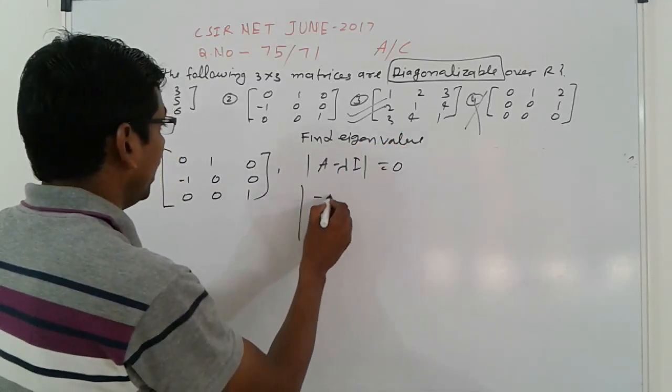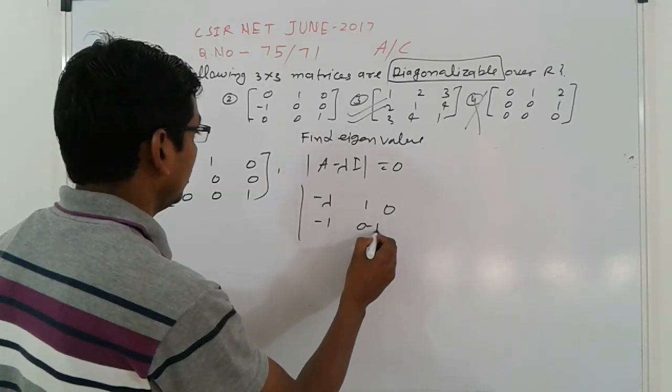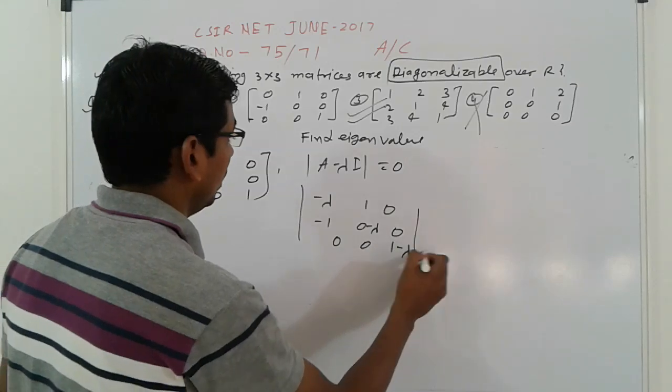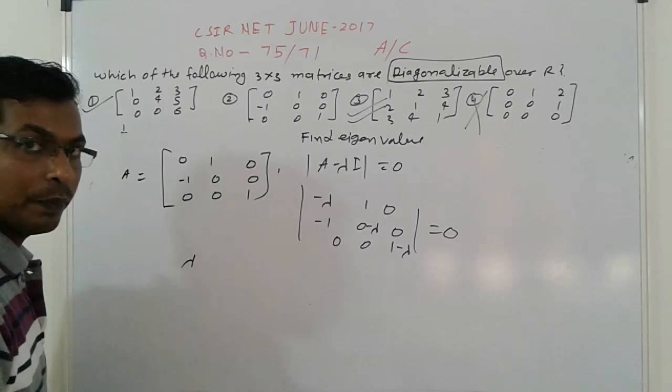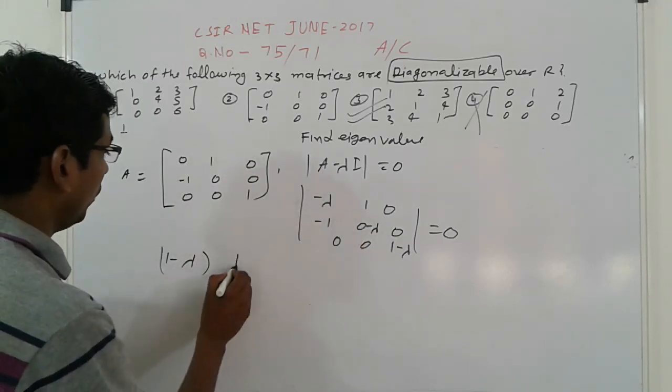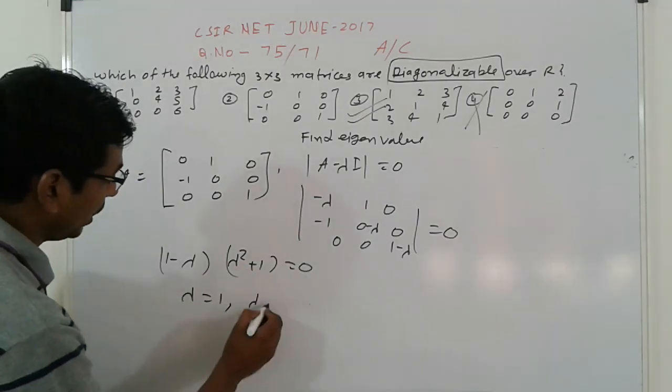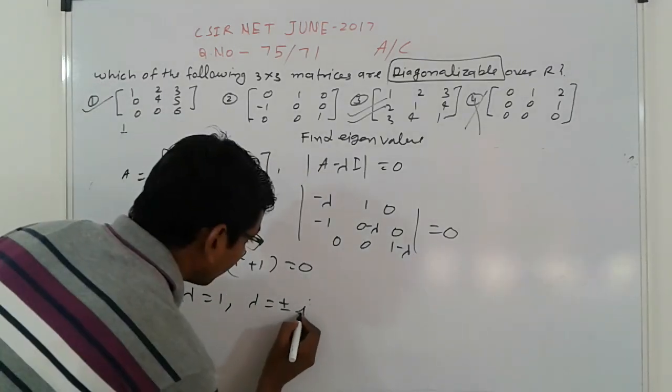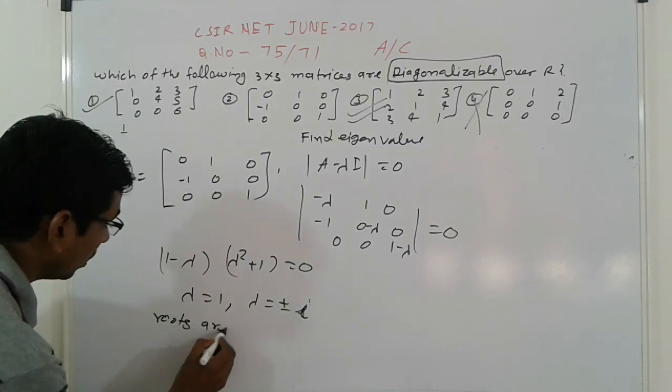This becomes minus λ, one, zero; minus one, minus λ, zero; zero, zero, one minus λ equals zero. Expanding this, it means λ(1 - λ), and here this is λ² + 1. So λ equals plus minus i.